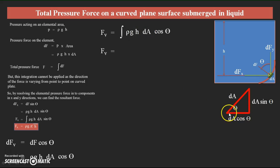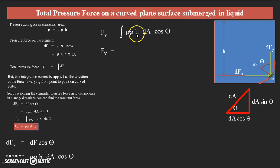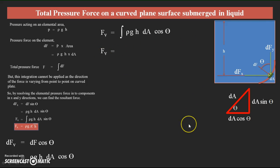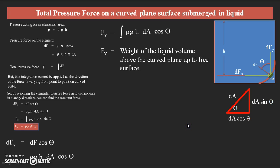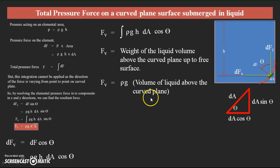The projected area of the curved surface multiplied by the depth h from the free surface gives a volume — height times area equals volume. So this force is due to the volume of liquid above the curved surface. Fy equals the weight of the liquid above the curved surface, which can be written as Fy = ρg × (volume of liquid above the curved plane up to the free surface).